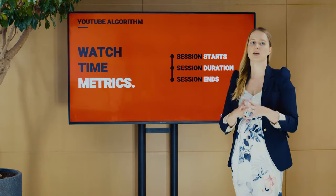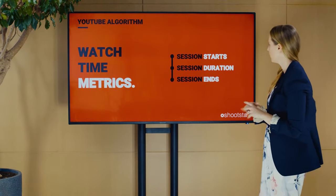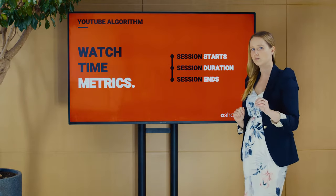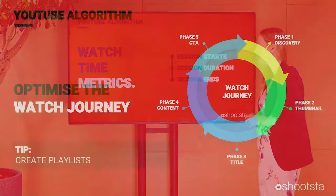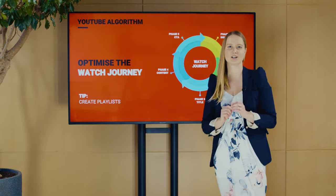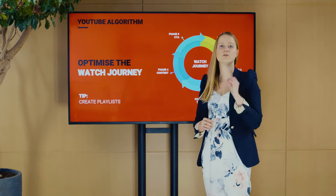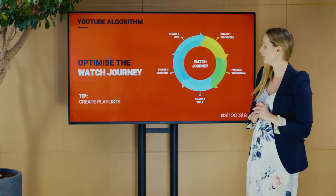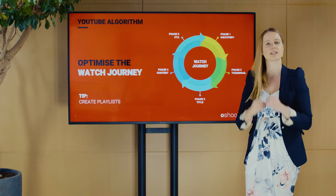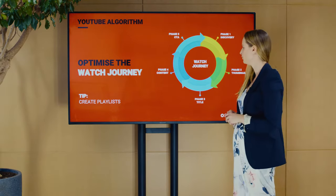The key takeaway: to increase watch time, make sure people start their YouTube session with one of your videos and stay for as long as possible. This is where the watch journey comes back into play — optimize it to maximize session starts and session duration. Another tip: create and share playlist links rather than just individual video links. By embedding playlists in EDMs or on your website, you ensure the next content in line is your content, not something suggested by the YouTube algorithm — a quick win for more watch time.